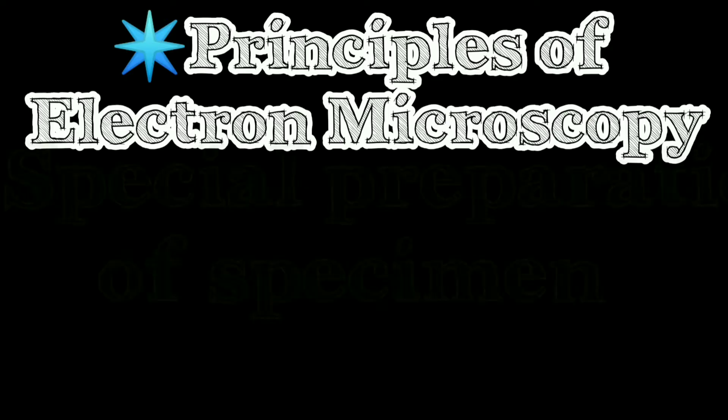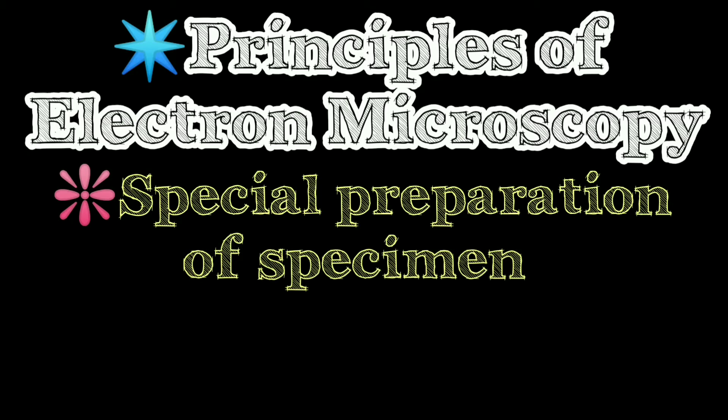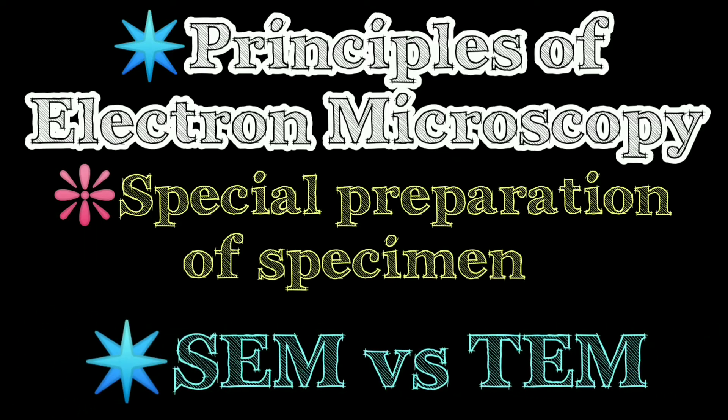And the next will be sample preparation of biological specimen in case of electron microscopy. And the third one is the basic types of electron microscopy and the differences between them.